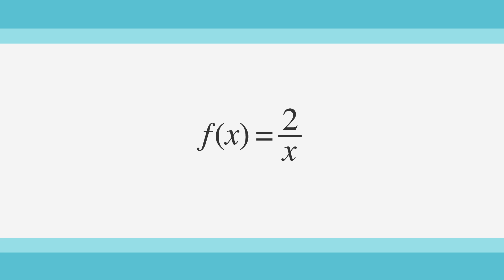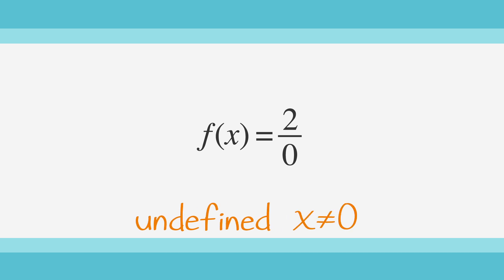For the function f equals 2 over x, the function is undefined when the denominator x equals 0. So x can't be 0, which means the domain of this function is all real numbers that are not equal to 0. Remember this rule in case you encounter it.